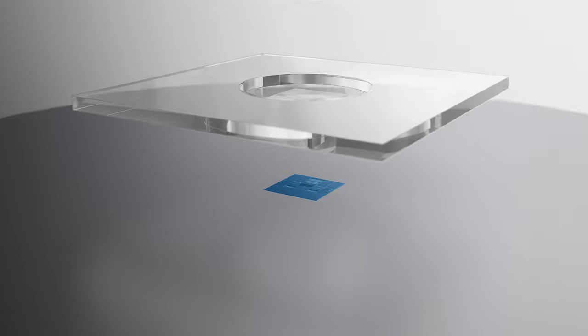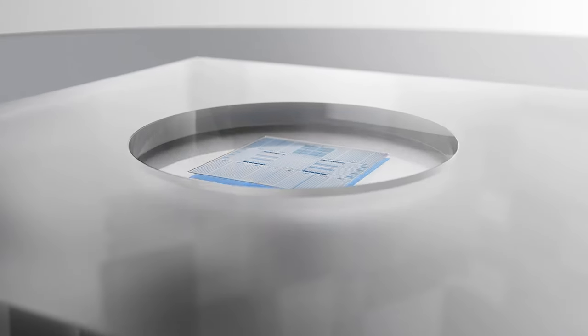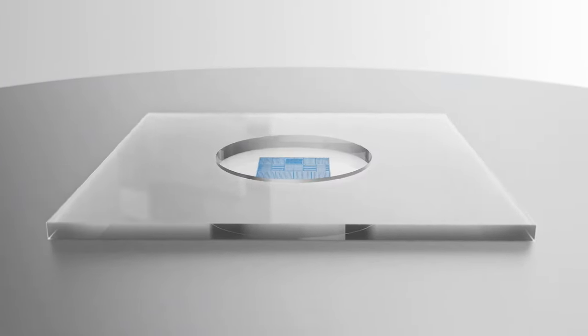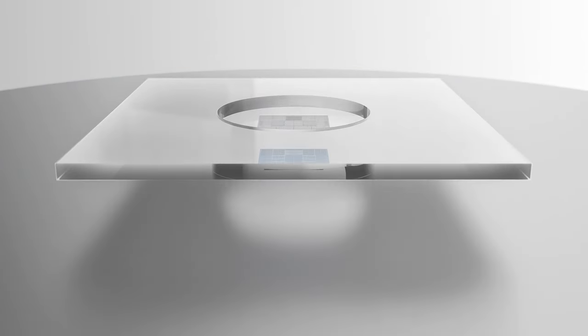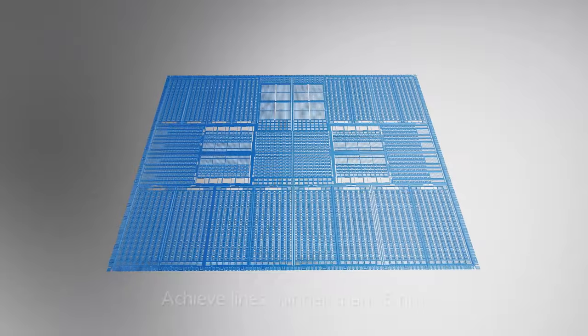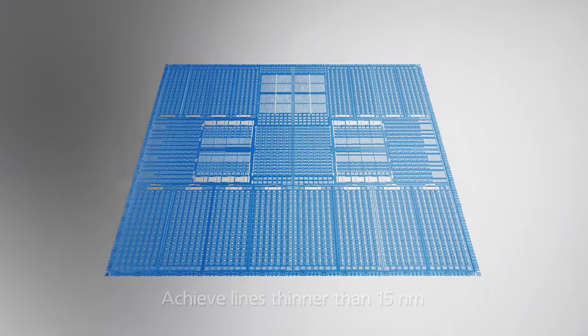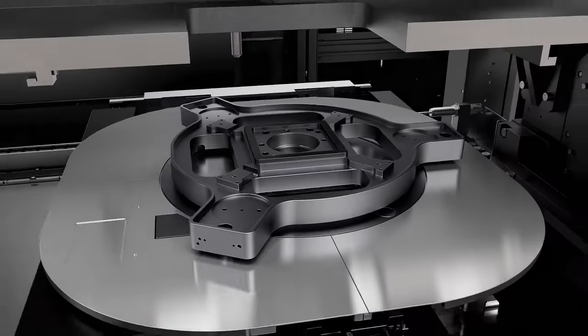Nano-imprint lithography stamps extremely fine patterns to form circuits. Despite the simplicity of the process, it can achieve lines as fine as 5 nanometers or even thinner. This new technology upends the conventional wisdom of semiconductor manufacturing.